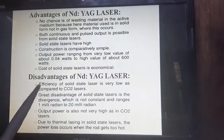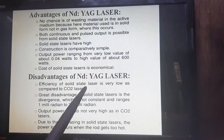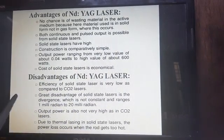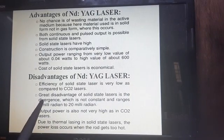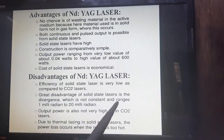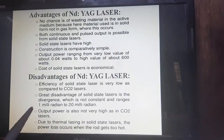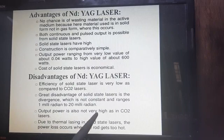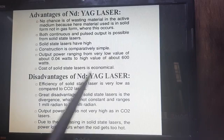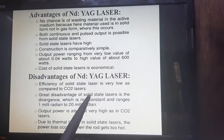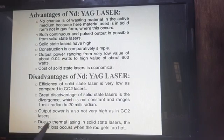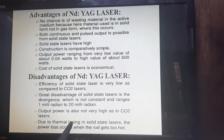Disadvantages: the efficiency of this laser is low compared to the carbon dioxide laser. The main disadvantage is divergence, which is not constant and ranges from 1 milliradian to 20 milliradians — this angular divergence is a concern. Output power is also not very high compared to CO₂ lasers. Due to thermal lensing in solid state lasers, power loss occurs when the rod gets too hot, which is not the case in gas lasers.